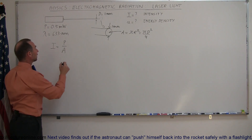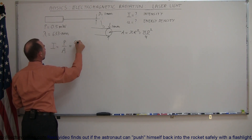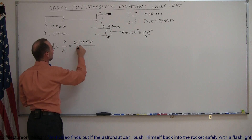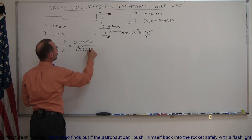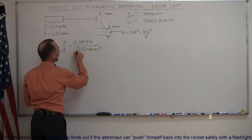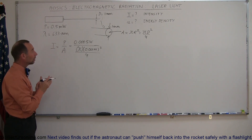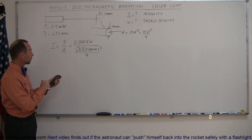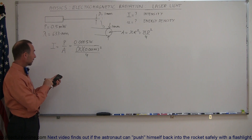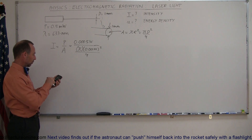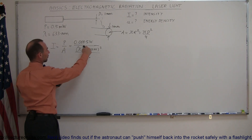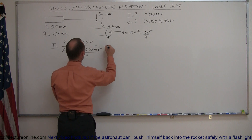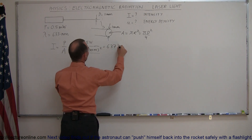Using that in our equation, the intensity equals the power — 0.0005 watts (converting from milliwatts) — divided by the area, which is π times the diameter (0.001 meters) squared, divided by 4. So we compute 0.0005 divided by π times (0.001)² divided by 4, which equals 637 watts per square meter. That is the intensity of the beam regardless of the distance from the source.